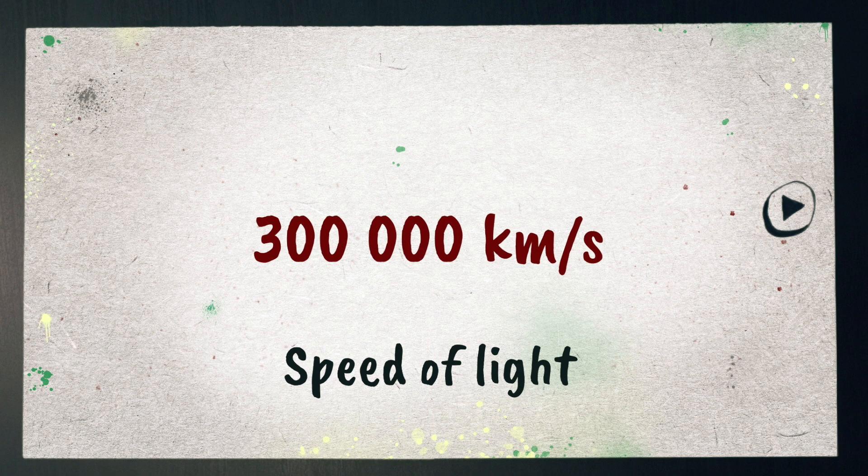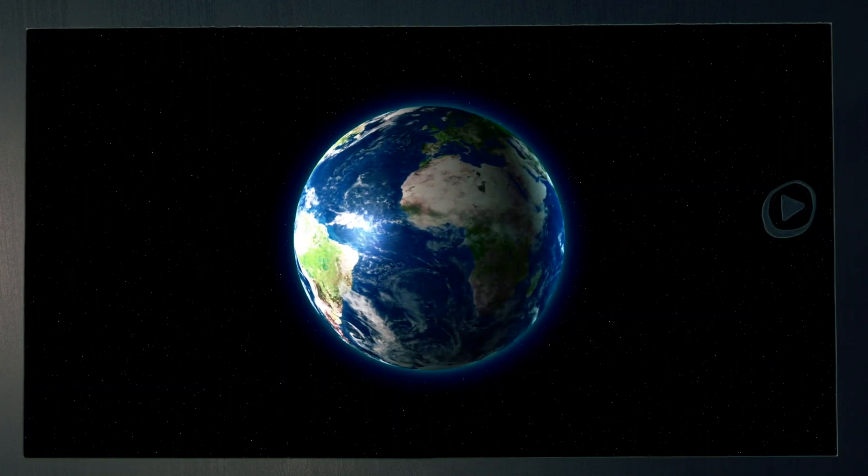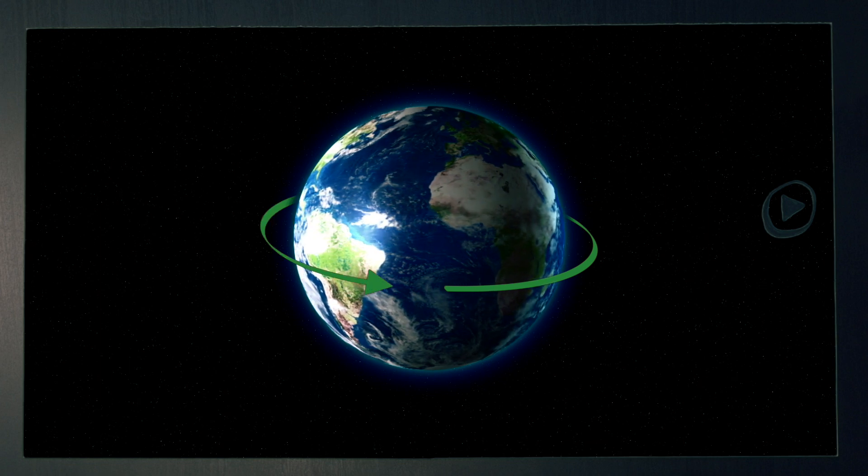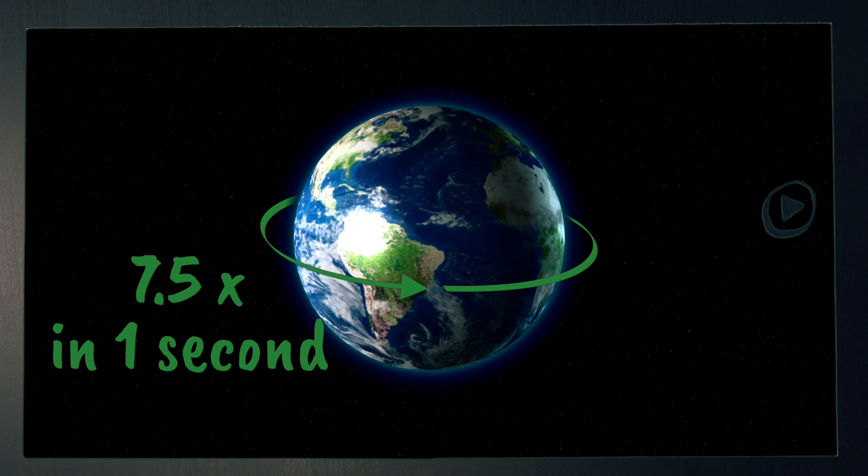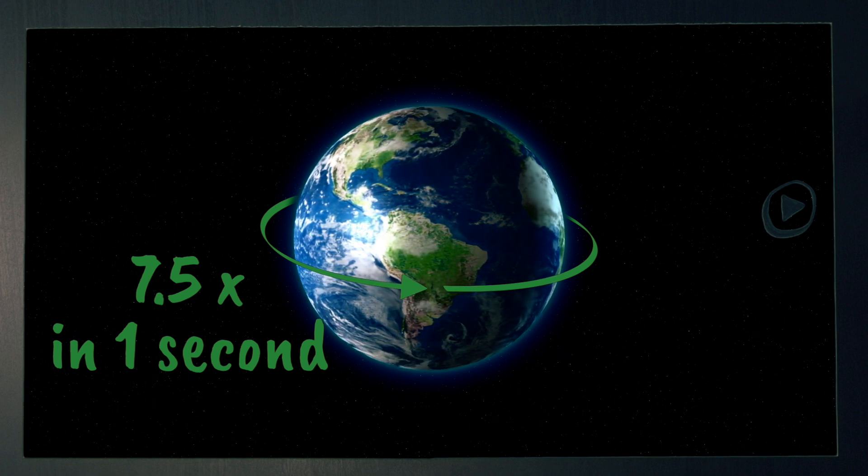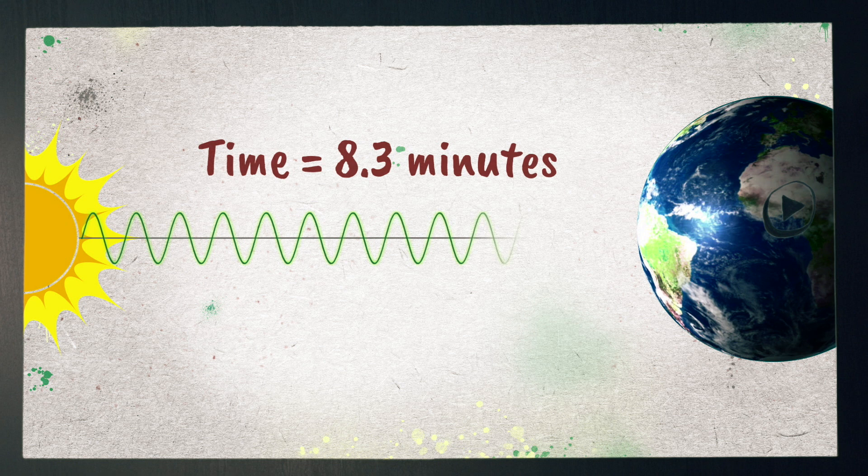Light travels at a speed of 300,000 kilometers per second. That means if a light wave went on a journey around the earth, it would loop our planet about seven and a half times in a single second. Even at this incredible speed, it takes light 8.3 minutes to reach the earth from the sun.